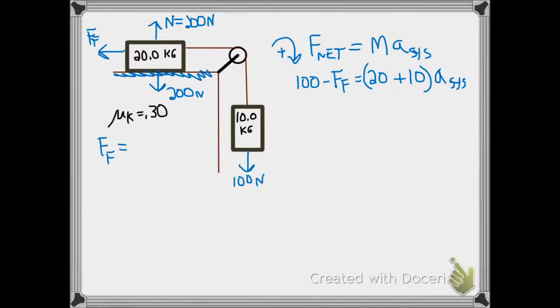Let's find the friction force using the equation normal force times the coefficient of friction, in this case 200 newtons times 0.30 or a friction force of 60 newtons.